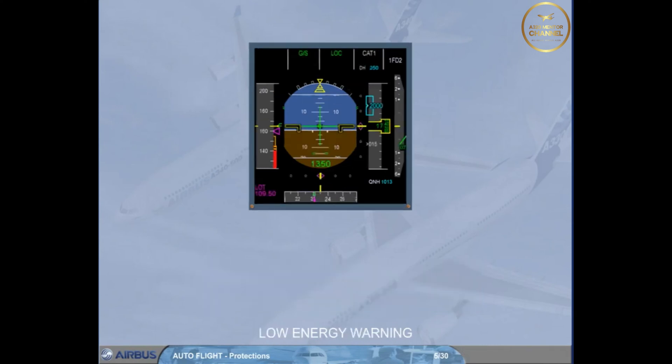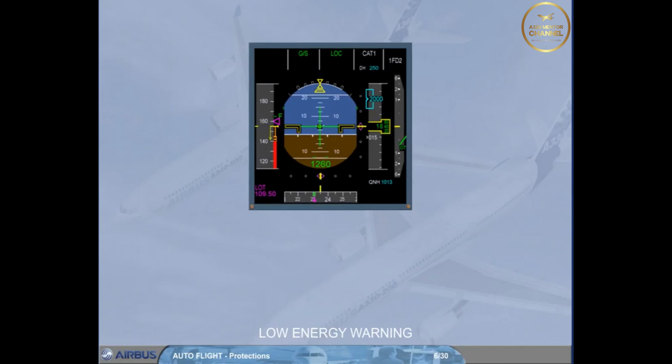If for any reason such as turbulence, shear, or autothrust off, the aircraft speed drops significantly below VLS, a repetitive "speed, speed, speed" warning is automatically triggered by the PRIM.